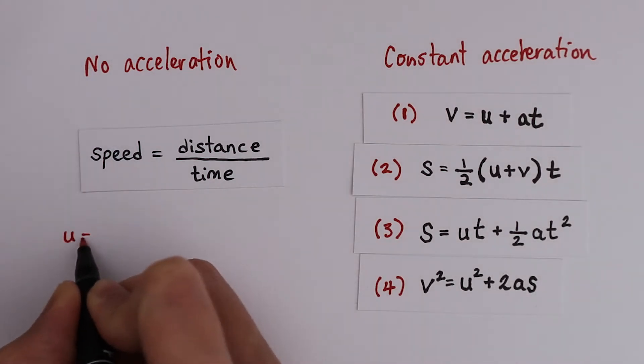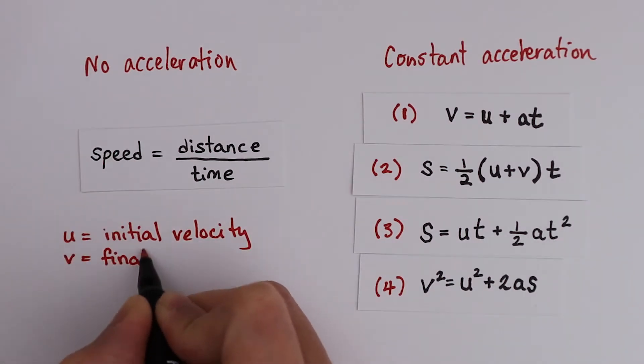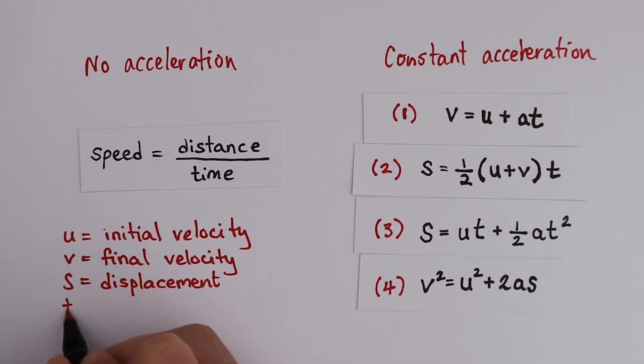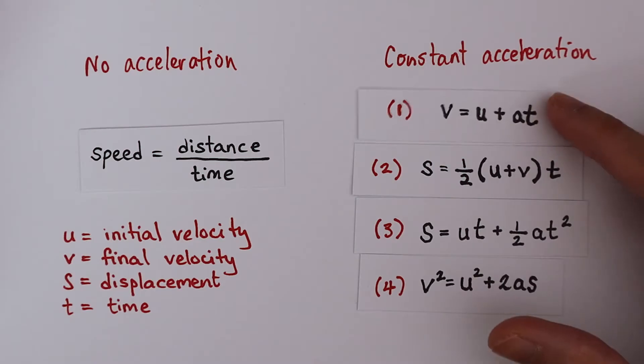For all these equations, u represents initial velocity, v represents final velocity, s is the displacement, and t is time. I'm going to show you how you can derive all of them starting from equation 1.